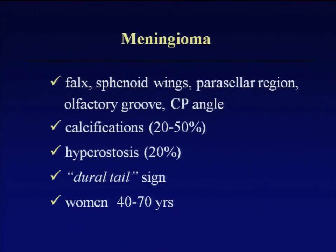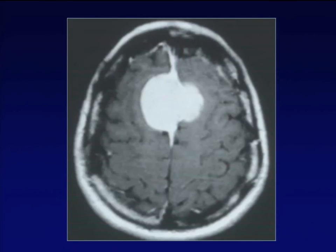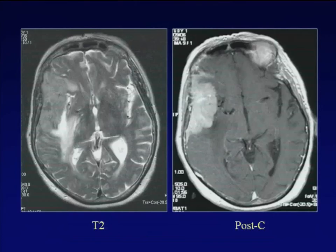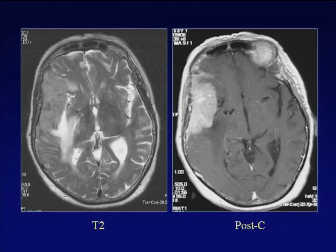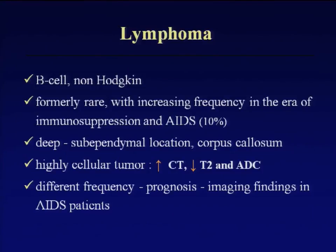Meningioma — typical locations are the falx and sphenoid wings. This falx meningioma shows a dural tail, very typical. Another case of meningioma illustrates the T2-weighted appearance. The characteristic feature in meningiomas is not just the enhancement — other tumors also show homogeneous intense enhancement — but few tumors in the brain are low density (low signal) on T2-weighted images, meaning very cellular, very dense tumors. Meningioma shows low T2 signal with intense homogeneous enhancement. Lymphoma is another tumor — rare in the past, now increased in frequency with immunosuppression — with a typical deep subependymal location around the corpus callosum, also a highly cellular tumor with low T2 signal.